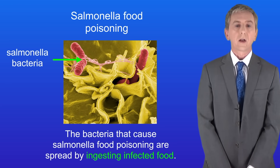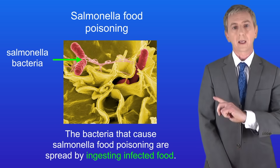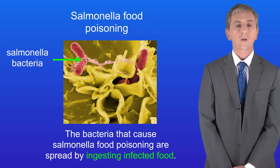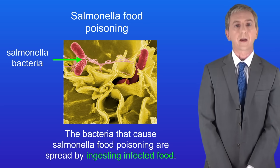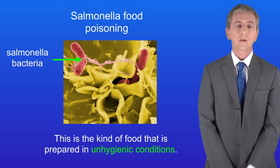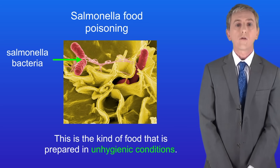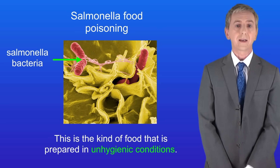Let's start by looking at salmonella food poisoning. The bacteria that cause this disease are spread by ingesting — which means eating — infected food. This is the kind of food prepared in unhygienic conditions. For example, if we use the same chopping board for raw chicken and then for other food without cleaning it in between.